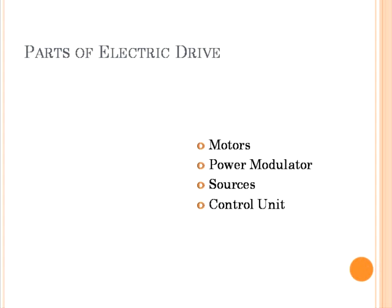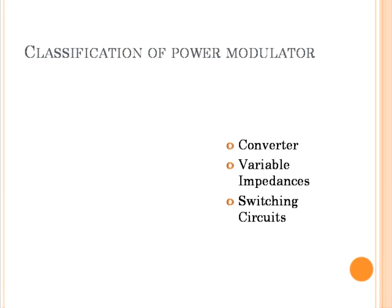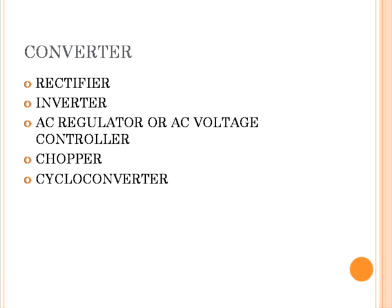Now the next component is the power modulator. Basically, the power modulator can be classified as converters, variable impedances, and switching circuits. Some drives may employ more than one of these modulators. When a power modulator performs a function such as rectification, it is classified as a converter. Types include: Rectifier, Inverter, Cycloconverter, AC voltage controller, and Chopper. The need for a converter arises when the nature of the available electric power is different from what is required for the motor.